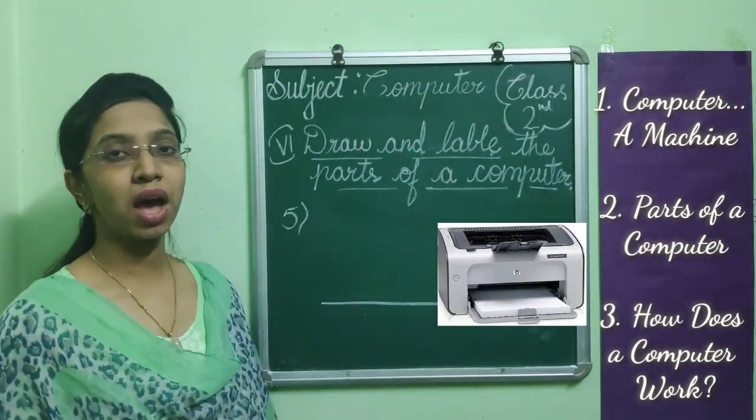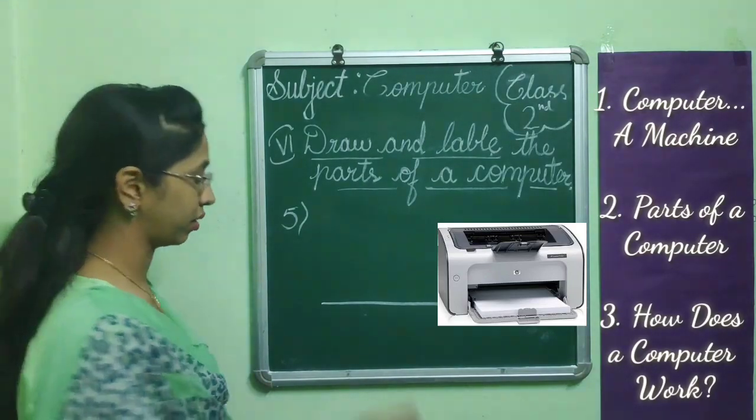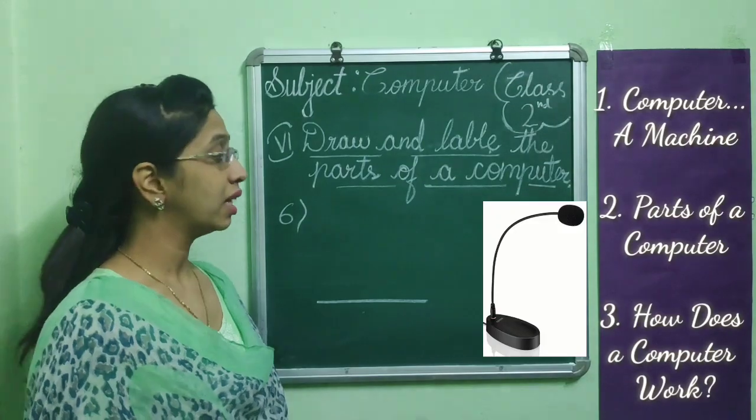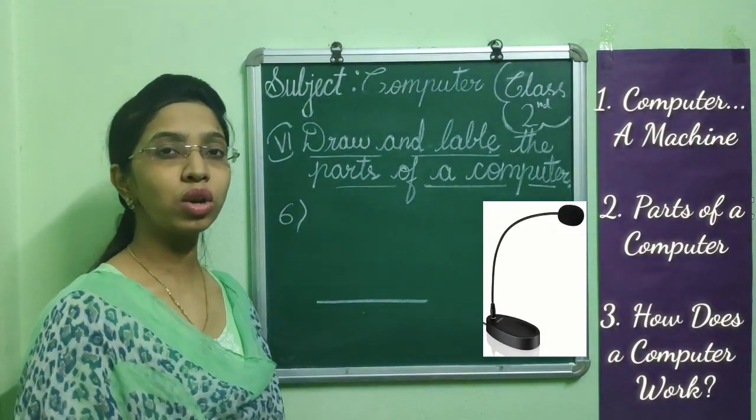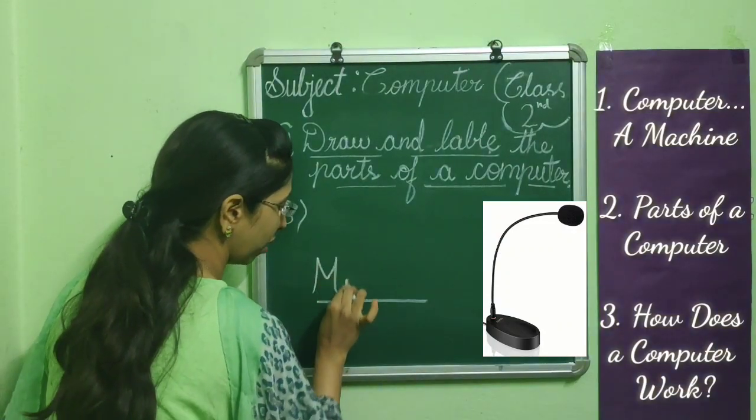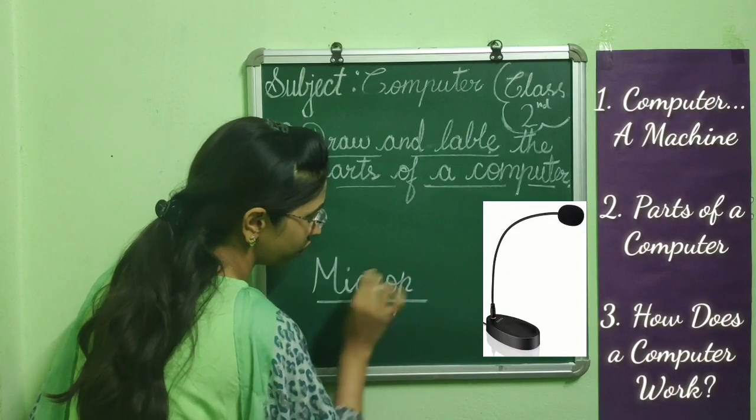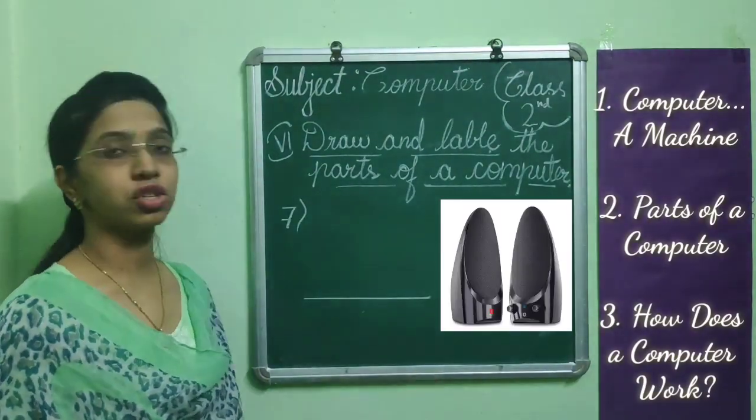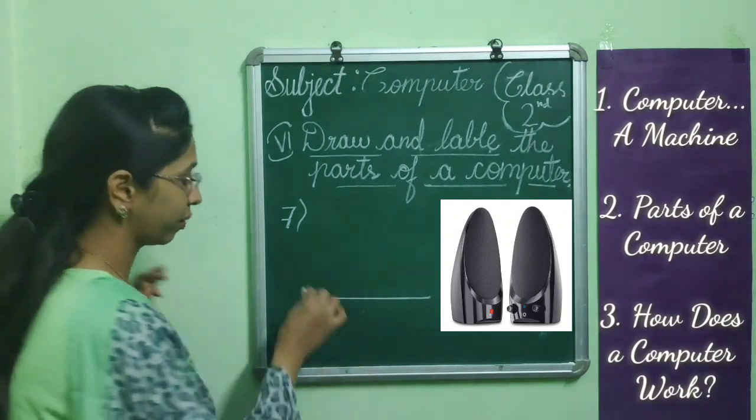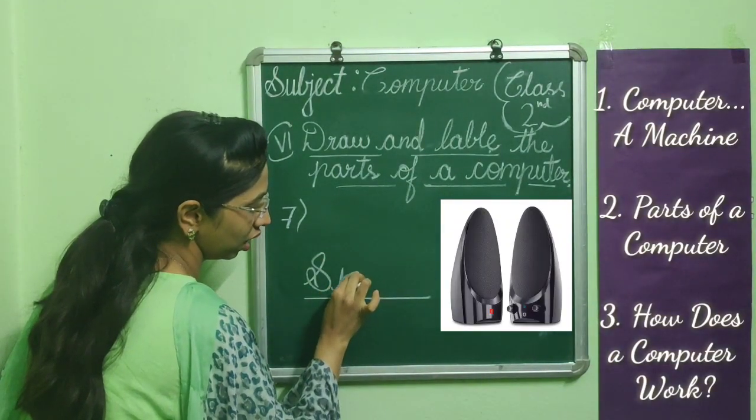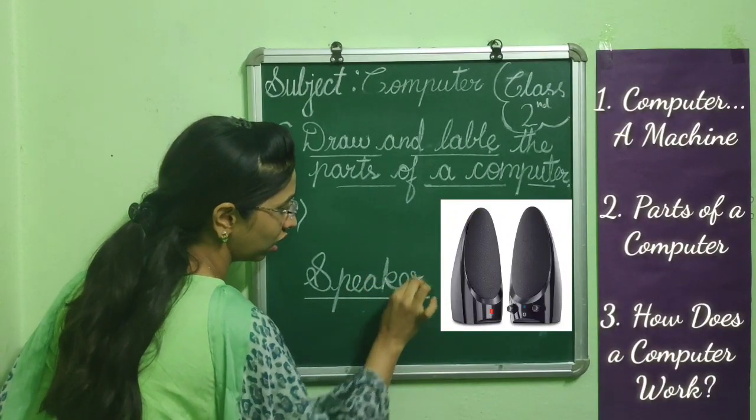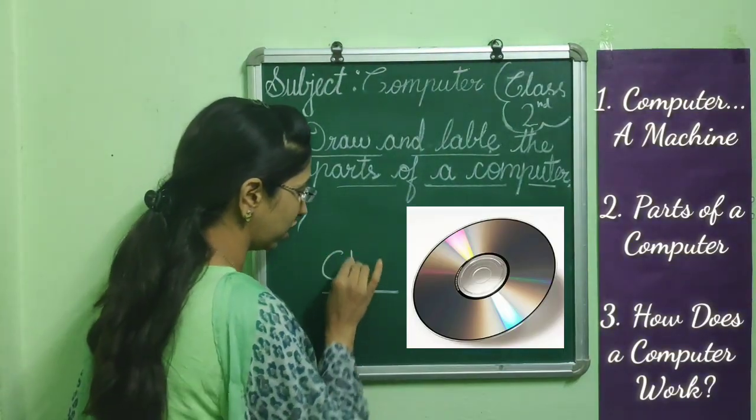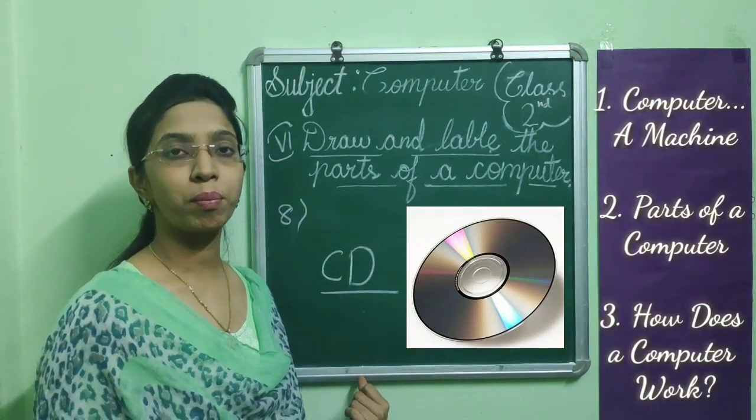Fifth one, this part of a computer is known as printer: P-R-I-N-T-E-R. This part of a computer is known as microphone: M-I-C-R-O-P-H-O-N-E. This part of a computer is known as speakers: S-P-E-A-K-E-R-S. This part of a computer is known as CD. The full form of CD is Compact Disc.